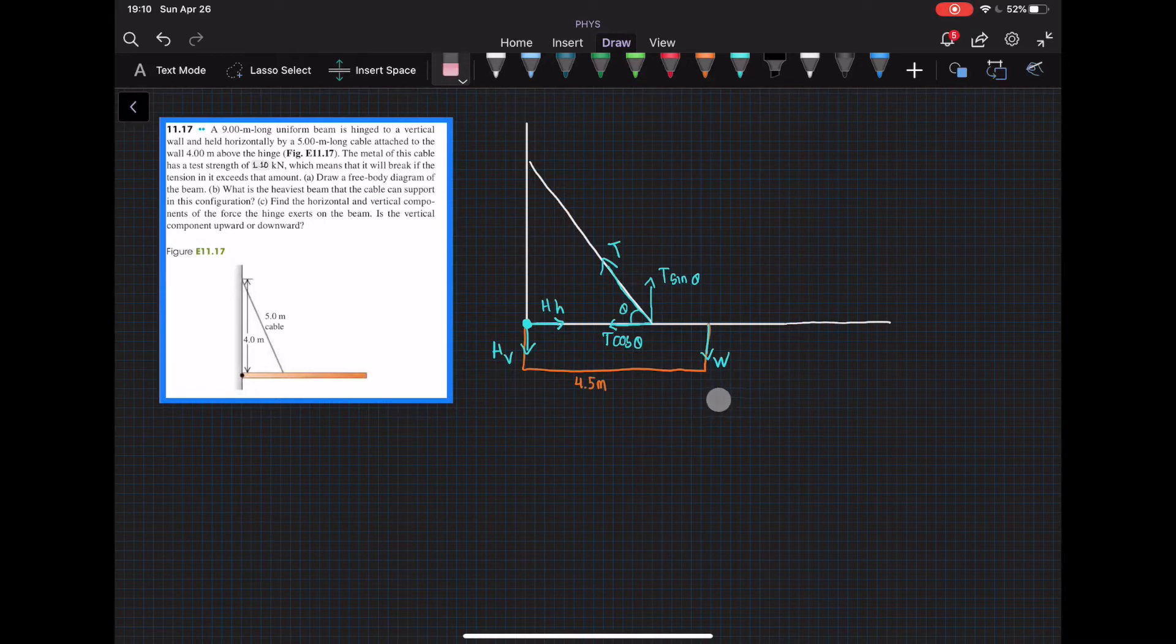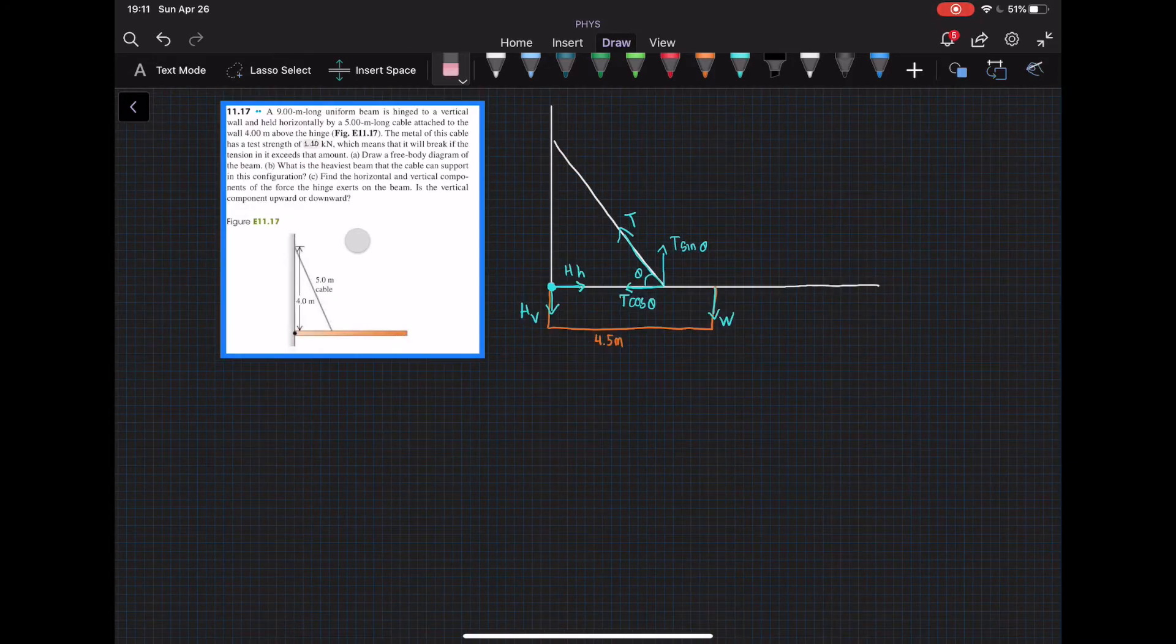We have the weight of the beam which is exactly in the middle at 4.5 meters. We also have the tension of the cable which is divided into two tensions, one in the horizontal direction and the vertical direction. And also we have the hinge or the pivot, they're also divided into two.